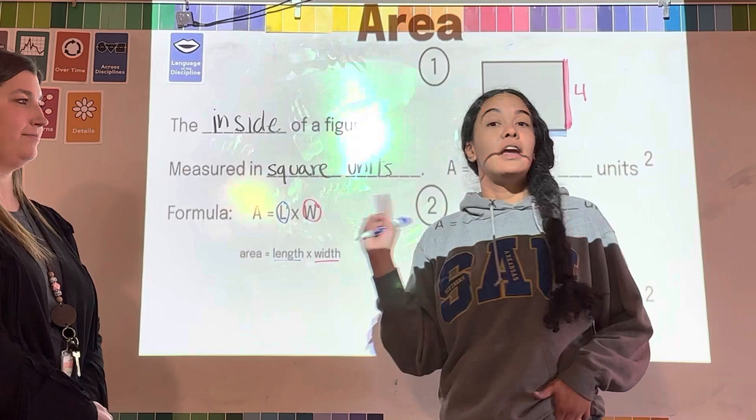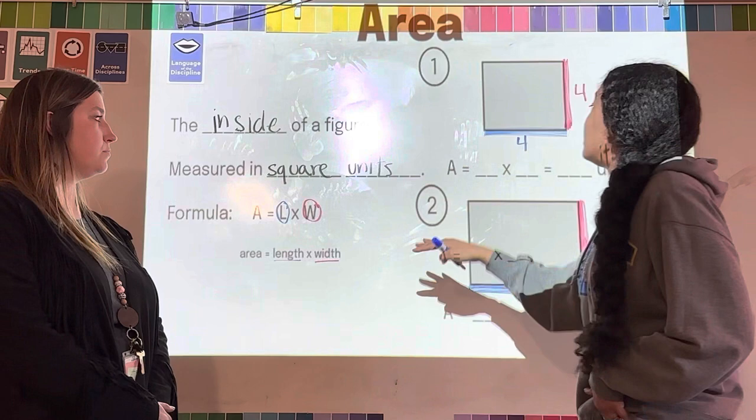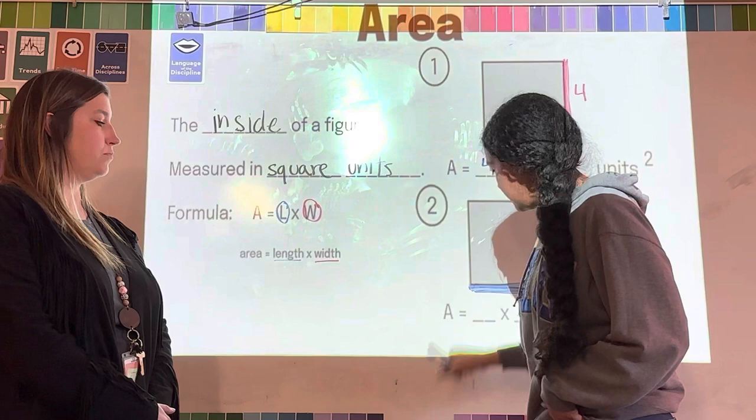You don't have to memorize this formula. It's going to be on the star chart that we are going to print out and give you guys this week. I'm going to plug my length which is four, and I'm going to plug out my width which is also four. It's a square, we're congruent.